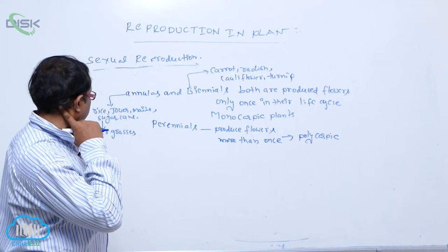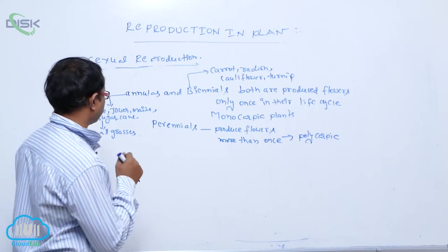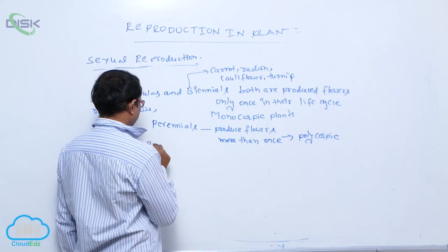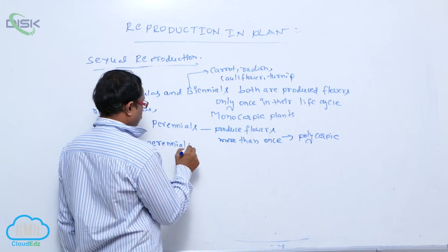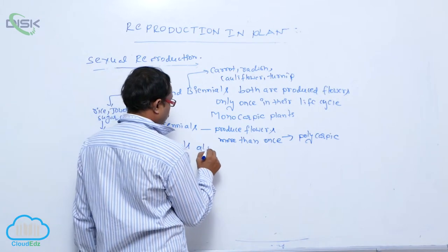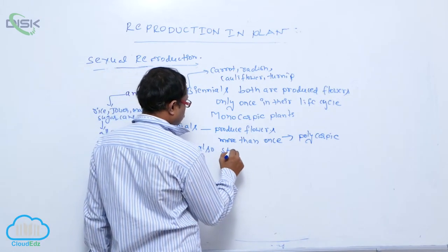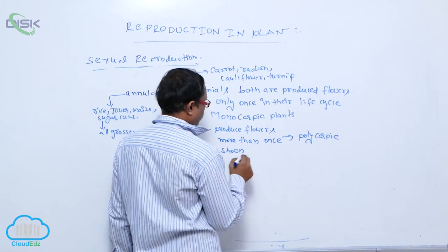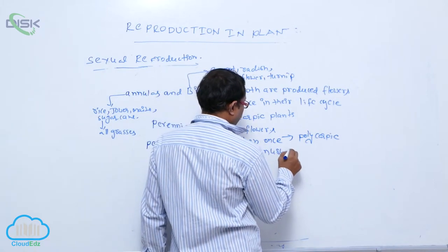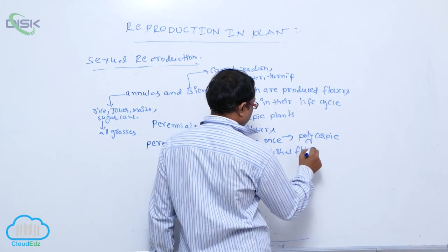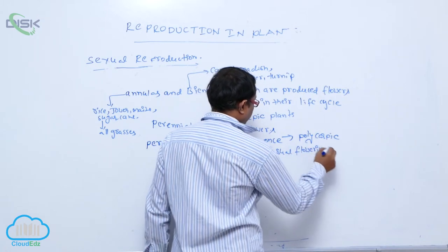Perennials produce flowers more than once. They are known as polycarpic. But some perennials also show unusual flowering.